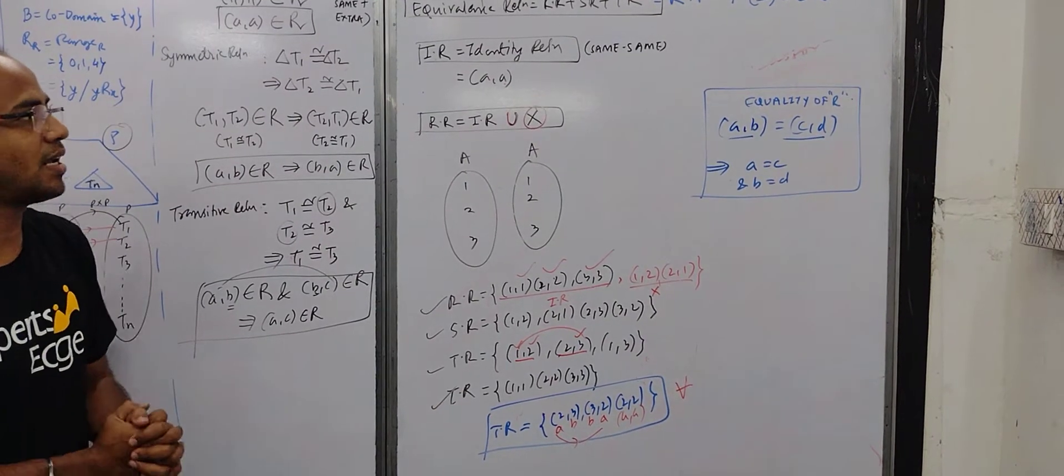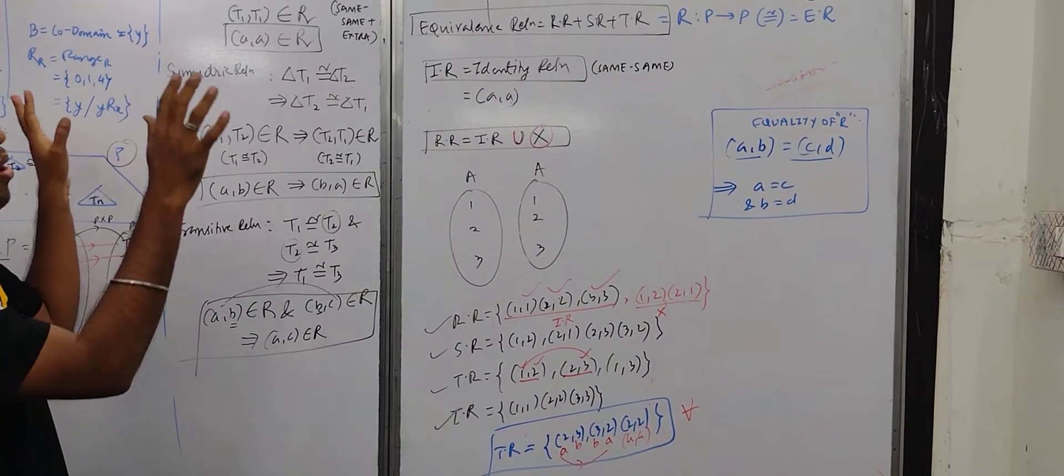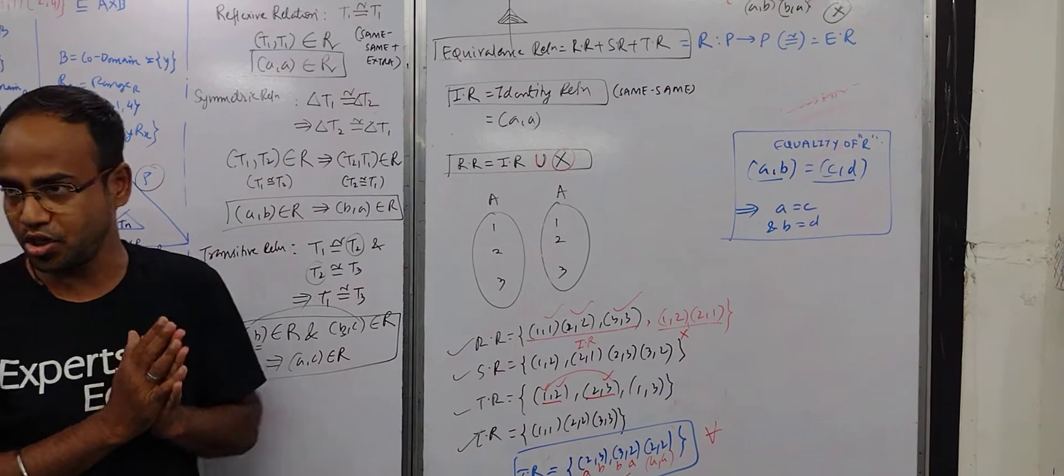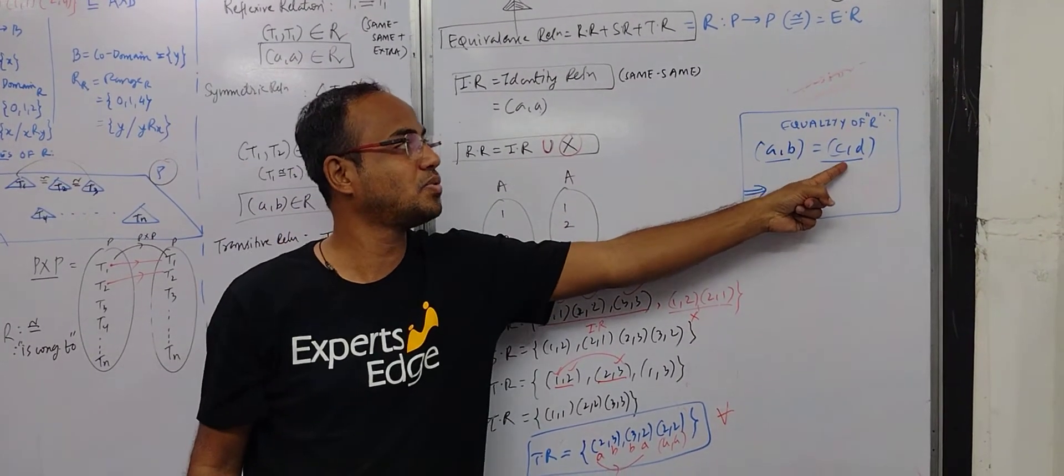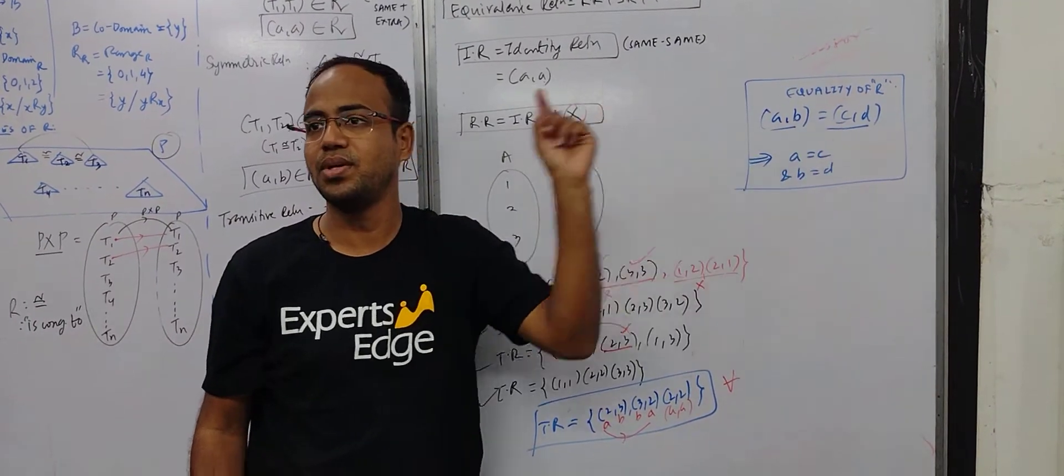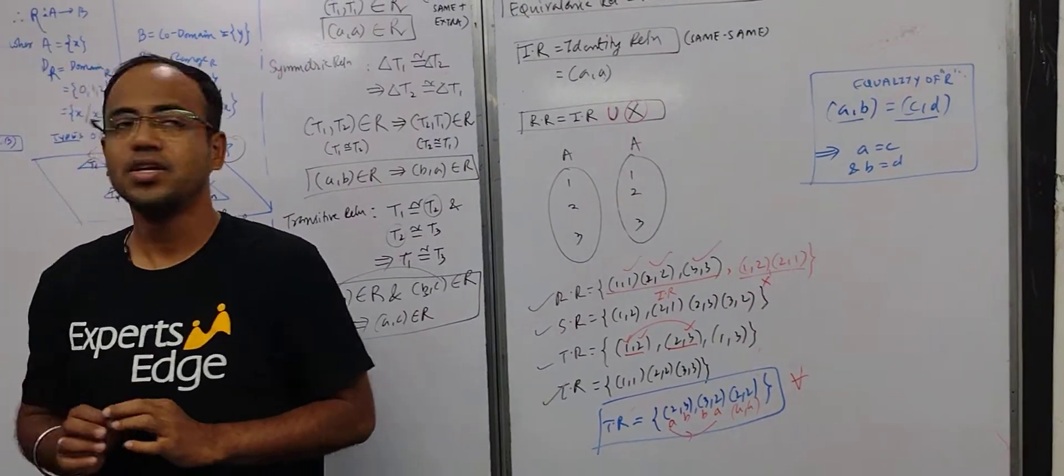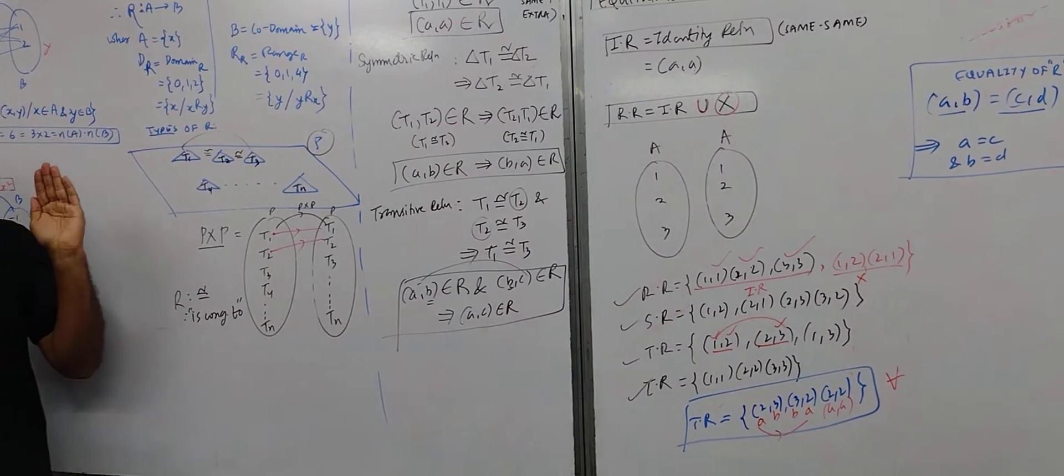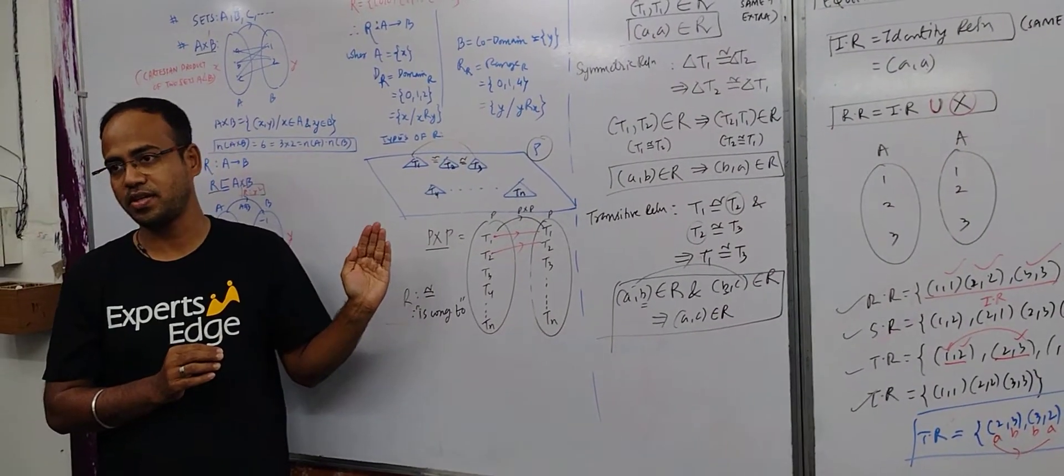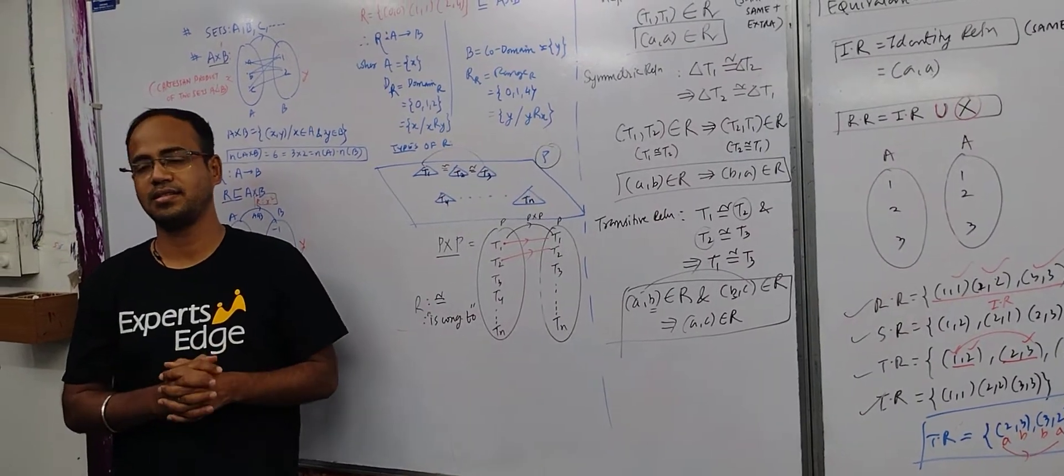So practically speaking, this concludes all the topics in relation. And this is known as equality of relation. If I say AB equal to CD, then A equal to C and B equal to D. Right? So this finishes off the whole relation. Now you can take any question on the basis of this and you can get the answer. Thank you.